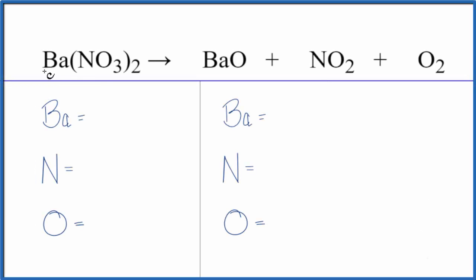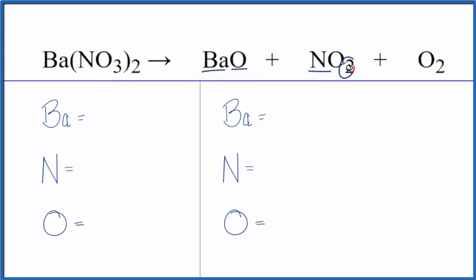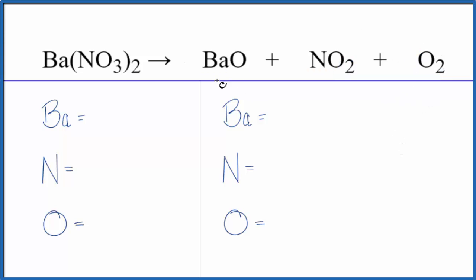In this equation we have barium nitrate decomposing or breaking down into barium oxide, nitrogen dioxide, and oxygen gas. This is a decomposition reaction. Let's count the atoms and then balance the equation.